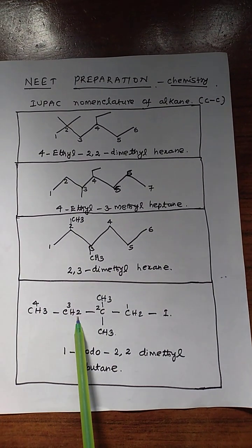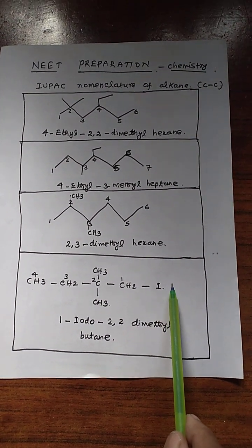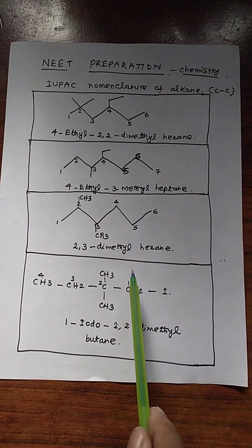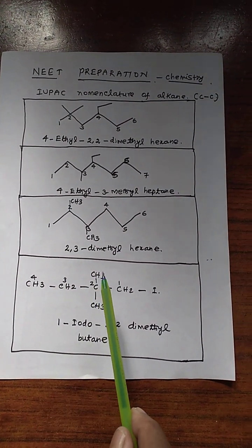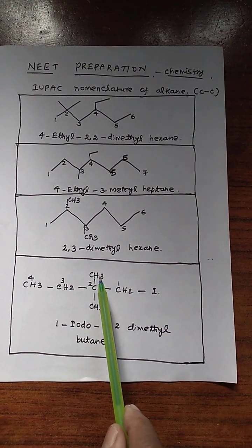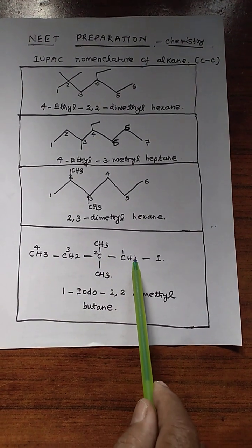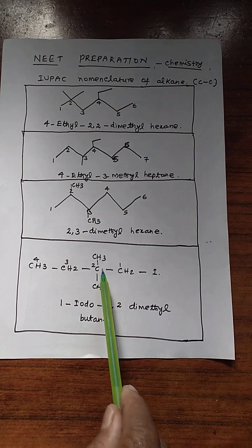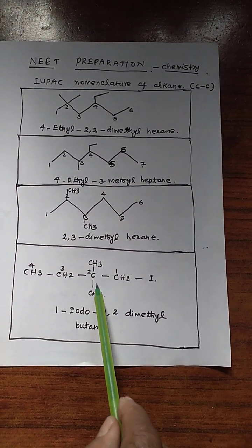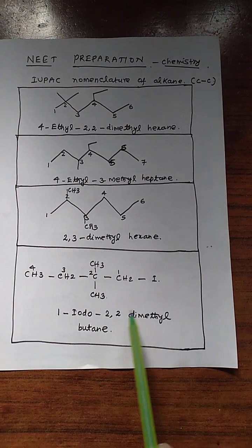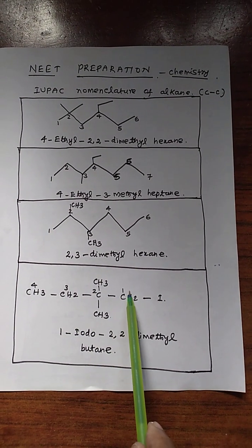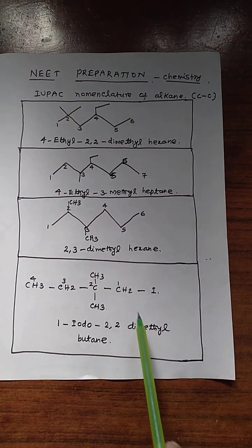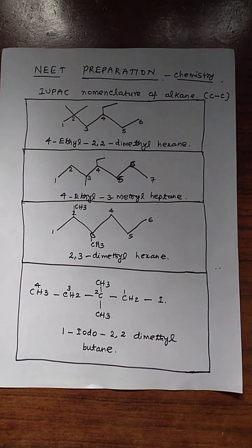Next one is CH3, CH2, CCH2I — iodine. So nearby this iodine group, numbering to be done here: 1, 2, 3, 4. The CH3 methyl groups are connected at the second carbon, and the first carbon is connected to iodine. So 1-iodo-I. The second carbon is connected to dimethyl CH3 group. So 2,2-dimethylbutane — butane means 4 carbons connected together. The name is 1-iodo-2,2-dimethylbutane. Like this we write in the IUPAC name system.